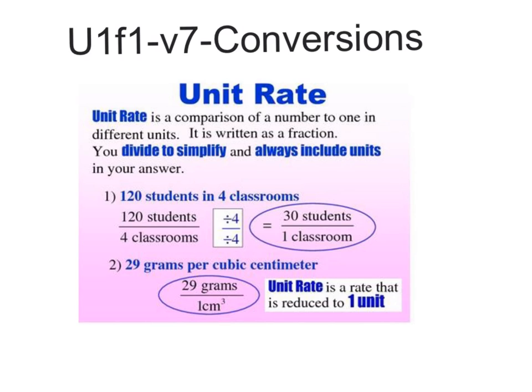So in the first problem here, we have 120 students in 4 classrooms. If we want to do a unit rate to see how many students are per classroom, we just do 120 students over 4 classrooms. And the denominator is 4, so that means we divide both the top and the bottom by the 4. So 120 divided by 4 is 30. 4 divided by 4 is 1.